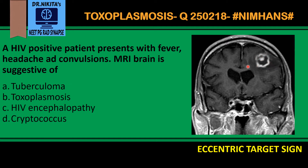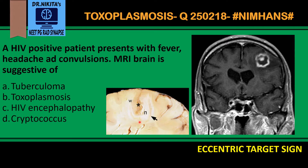The surrounding black area is the edema. This eccentric enhancement has been called the eccentric target sign, which is very specific for toxoplasmosis. This is the abscess of toxoplasmosis, which has necrosis at its center, and the wall of the abscess enhances due to the histiocytic response, while the necrosis does not enhance because it is dead tissue.